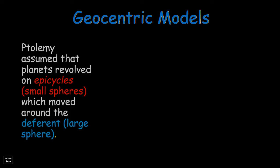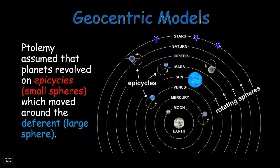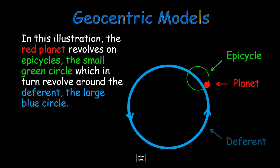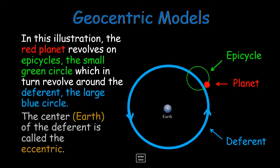In his model, Ptolemy assumed that planets revolved on epicycles, the small spheres, which in turn moved around the deferent, the large sphere. In this illustration, the red planet revolves on epicycles, the small green circle, which in turn revolve around the deferent, the large blue circle. The center, which is Earth, of the deferent is called the eccentric.